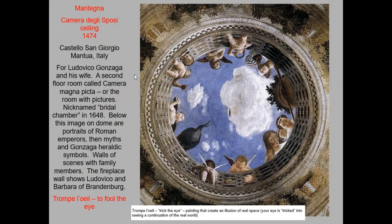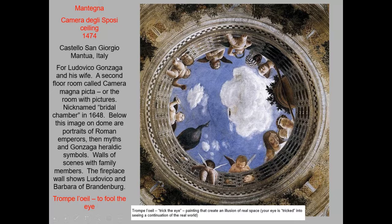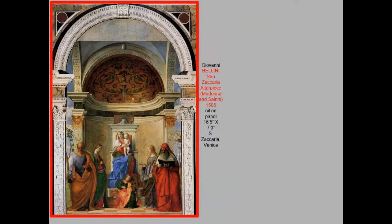Mantegna is an important artist as we move toward the High Renaissance, best known for his believable three-dimensional illusions using foreshortening. The Camera della Sposi — the Room of the Wedding — features a ceiling painting viewed from below, with intense foreshortening: the feet of the putti are closest to you, their bodies much shorter than normal. We can also call this a trompe l'oeil painting — literally 'to fool the eye' — tricking the viewer into believing they see an oculus, an opening to the open air above.